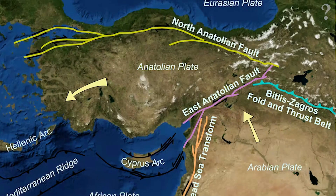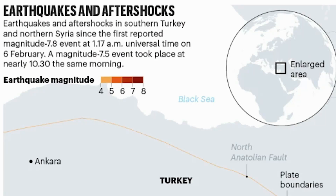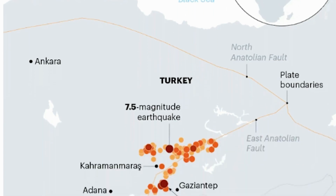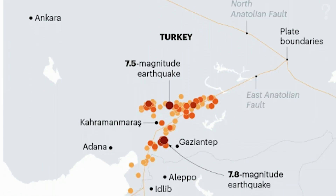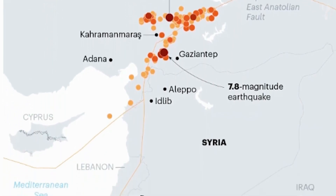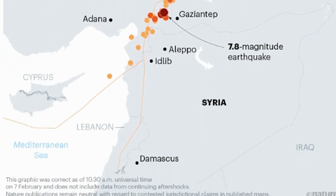Turkey and Syria are located in a highly active tectonic region where several major tectonic plates converge. The region is characterized by complex tectonic interactions and the presence of several major fault lines, including the North Anatolian fault in Turkey and the Dead Sea fault in Syria. The presence of these major fault lines makes it a high-risk zone for earthquakes.